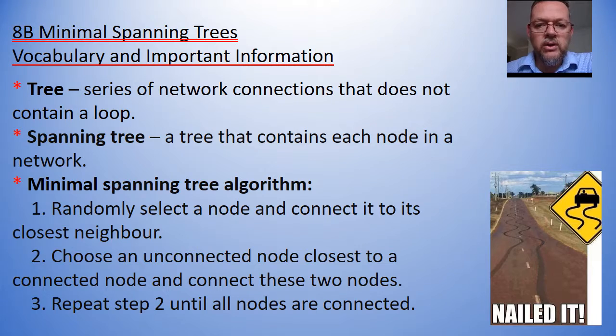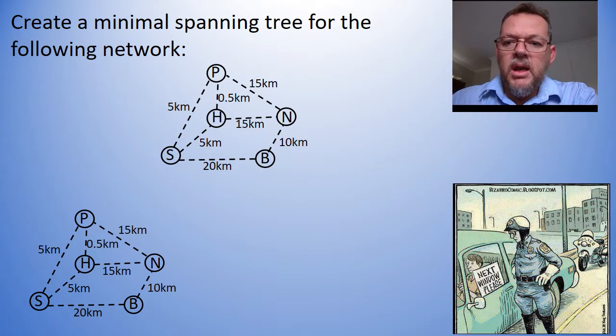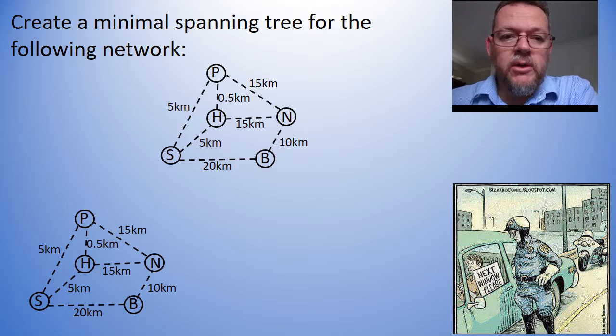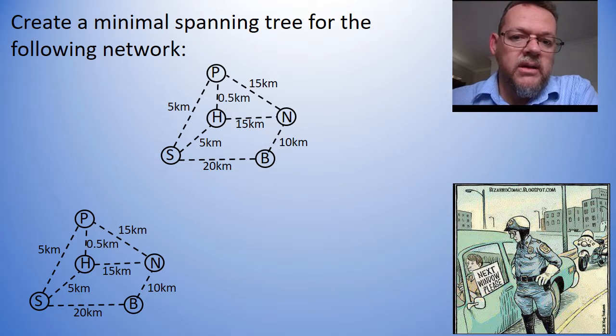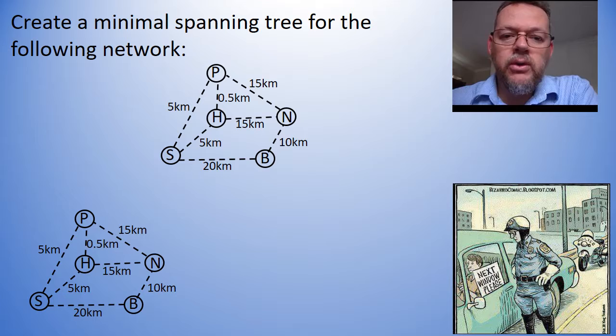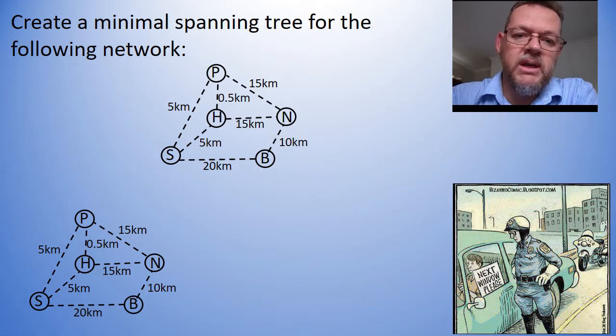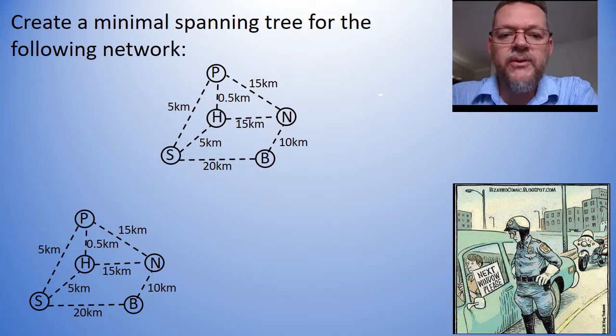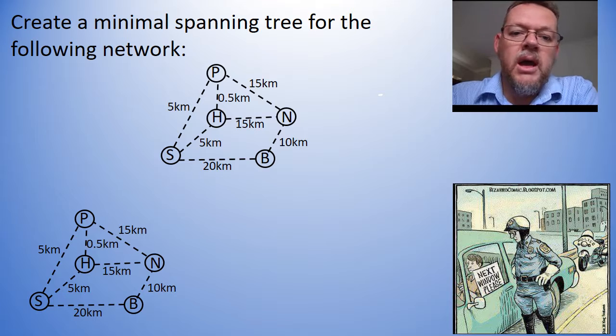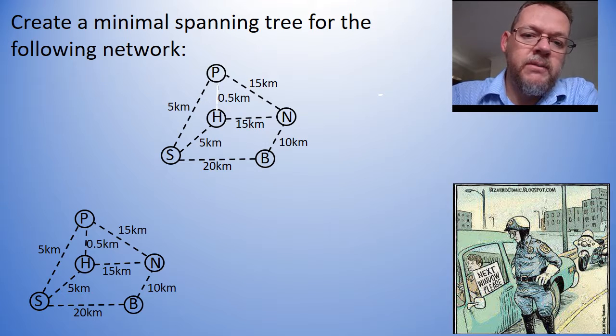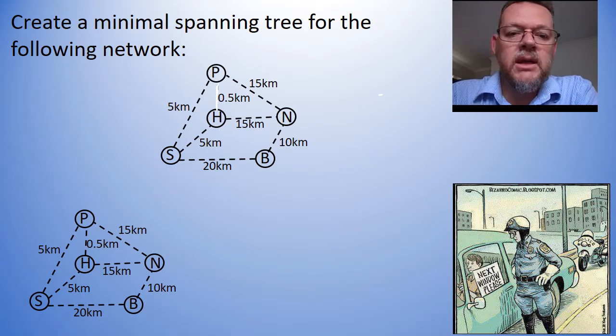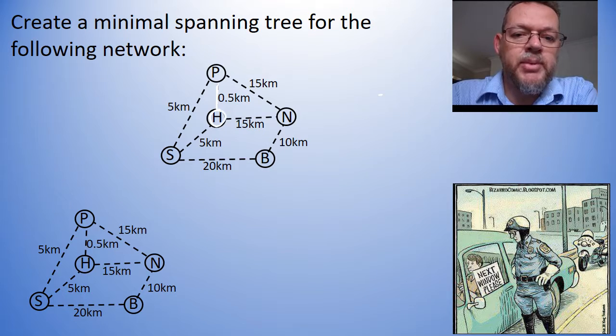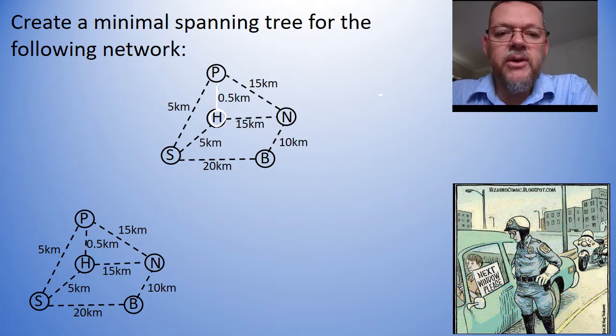So we'll do one soon. Now I've got these two networks here. They're both the same, but I just want to show you how it's done. So first of all, we want to choose a random node. Now H looks nice and small or nice in the middle. And we're just going to see what's the smallest arc. Is it 5, 15 or 0.5? So I'm just connecting H up to P. So we've taken 0.5 per kilometer.